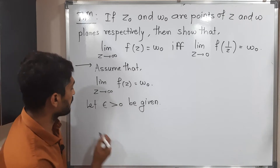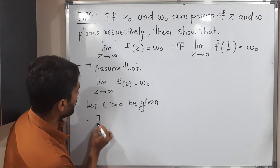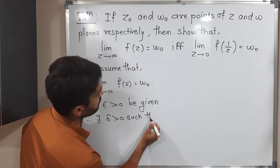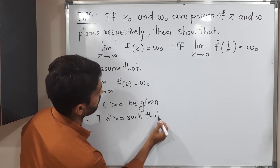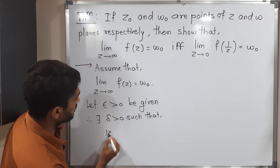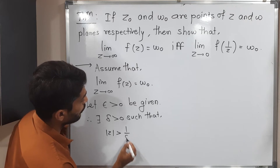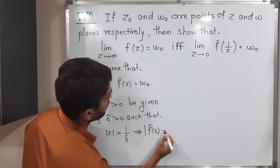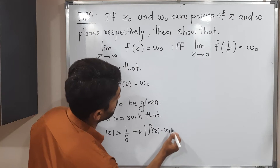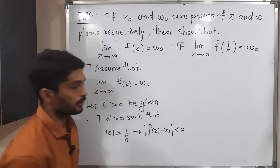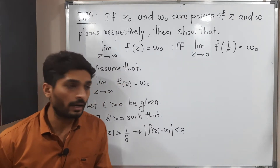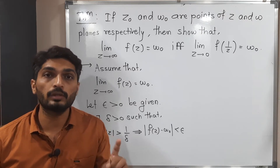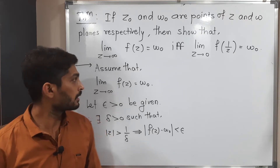Therefore, there exists delta greater than 0 such that mod z greater than 1/delta implies mod f(z) minus w₀ less than epsilon. You may be wondering why I wrote mod z greater than 1/delta — it is because z approaches infinity here.